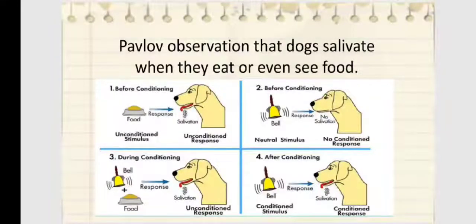So this is the example of classical conditioning. Pavlov's observation that dogs salivate when they eat or even see food. So first, before conditioning, when you show food to a dog, its response is to salivate. So that is called unconditioned response. When you ring a bell and the dog hears it, that is called no conditional response because what would it do with the bell ring if there's no food to see.